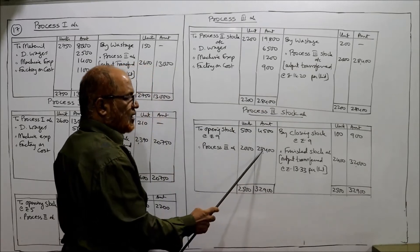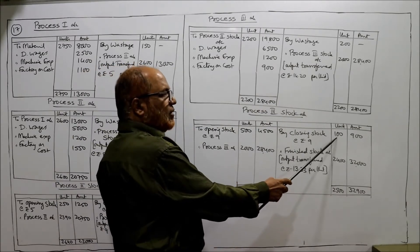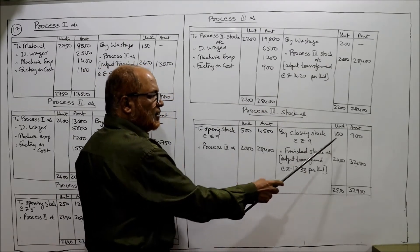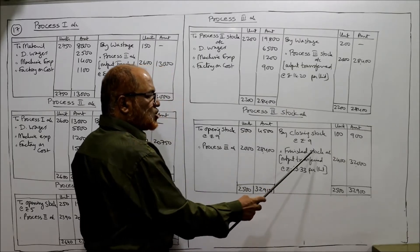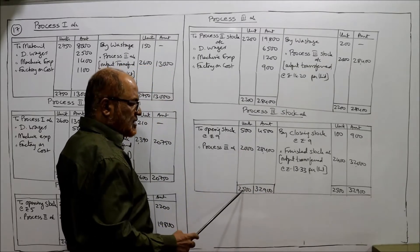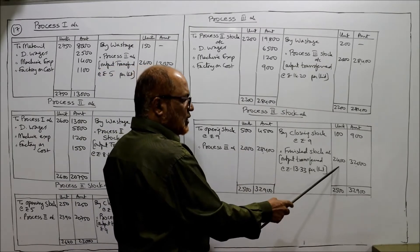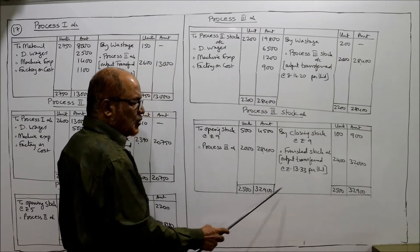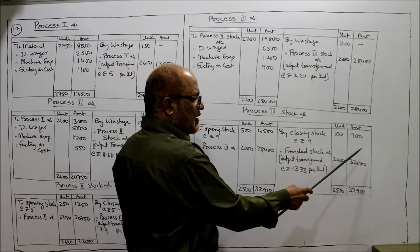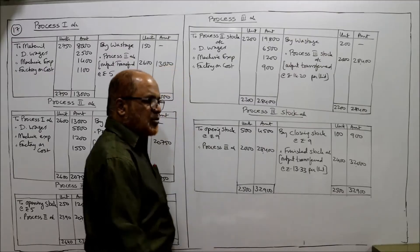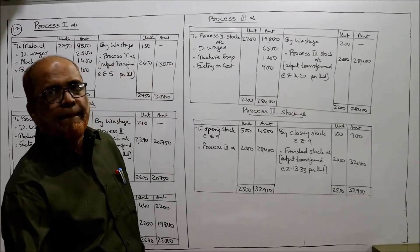The debit side total for the process three stock account is 28,400. By closing stock: 100 units given in the problem, into 9 rupees equals 900. By finished goods — balancing figure: debit side 2,500 minus 100 equals 2,400 units. Debit side value is 32,900; 32,900 minus 900 equals 32,000. So per unit cost comes to 13.33 rupees. That is the end of problem number 17.